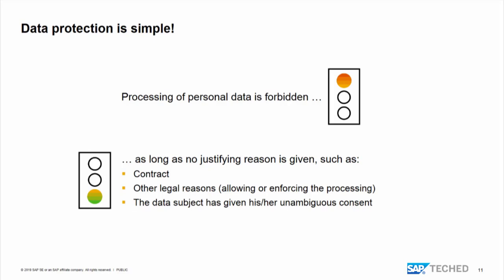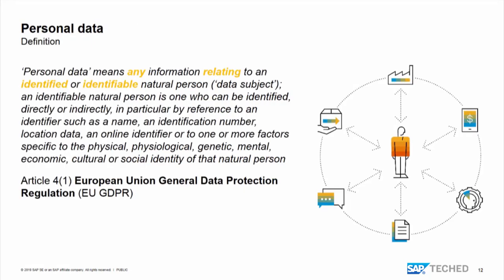The third of the six legal grounds is consent. If you have a newsletter or coupons, people might opt in and agree that you send them a mail or call them. Of course, as soon as the person opts out, you have to delete the data. And the same logical point: as soon as the contract is over and there is no other legal ground to process the data - the customer is happy, didn't send the product back, you did all your financial reporting - there is no legal ground to process personal data. Then you have to block it and, at the end, delete and destroy it.